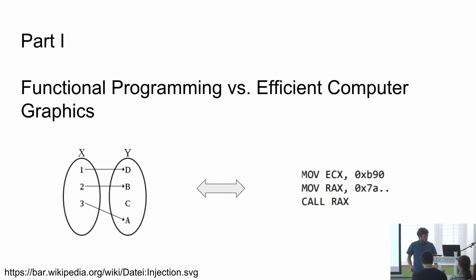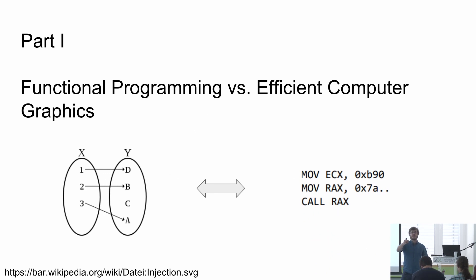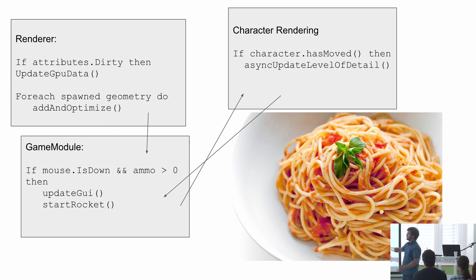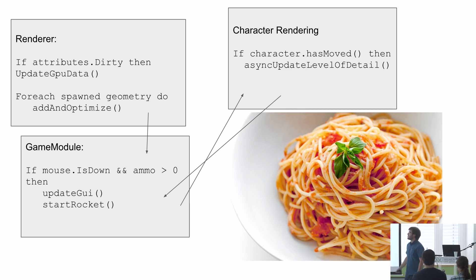The first part is how to combine functional programming with high performance. When we looked at our engine code several years ago, we found it was spaghetti-like. Considering a game scenario: a game module updates the user interface because something happened — the user fired a weapon, we need to start a rocket. This has an effect on the renderer because it needs to update the GPU data and allocate new GPU buffers. All this needs to work together and it's very tangled and hard to debug.